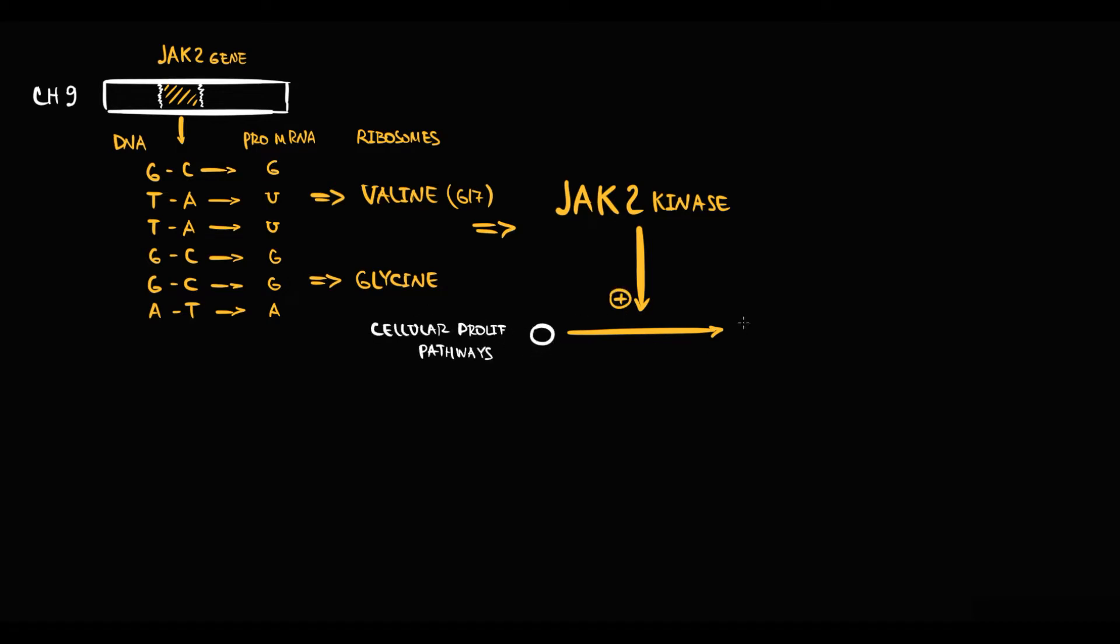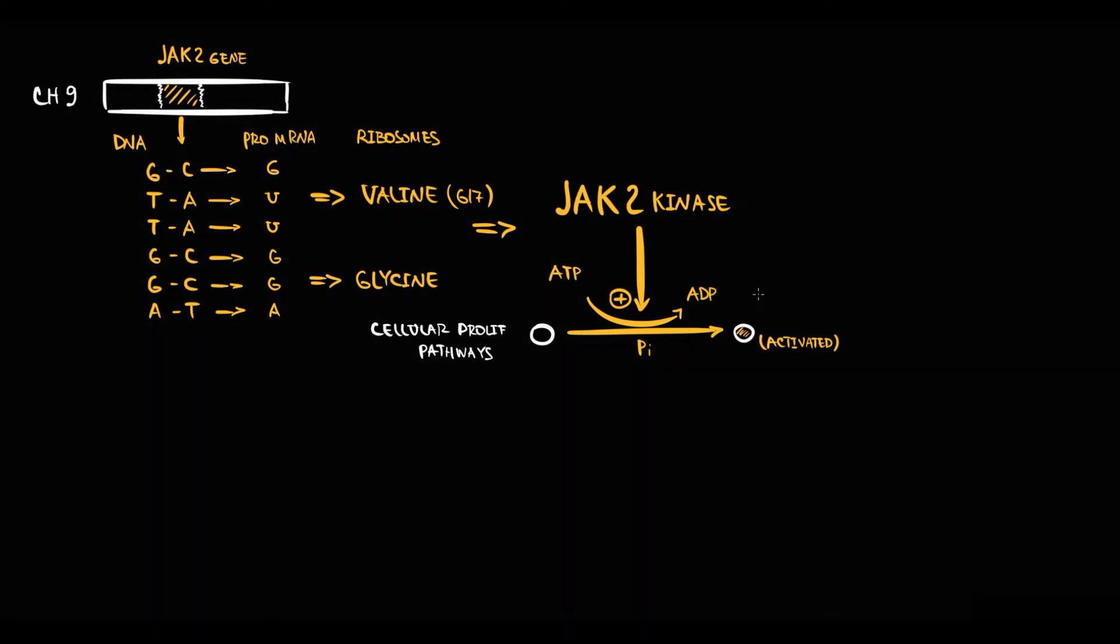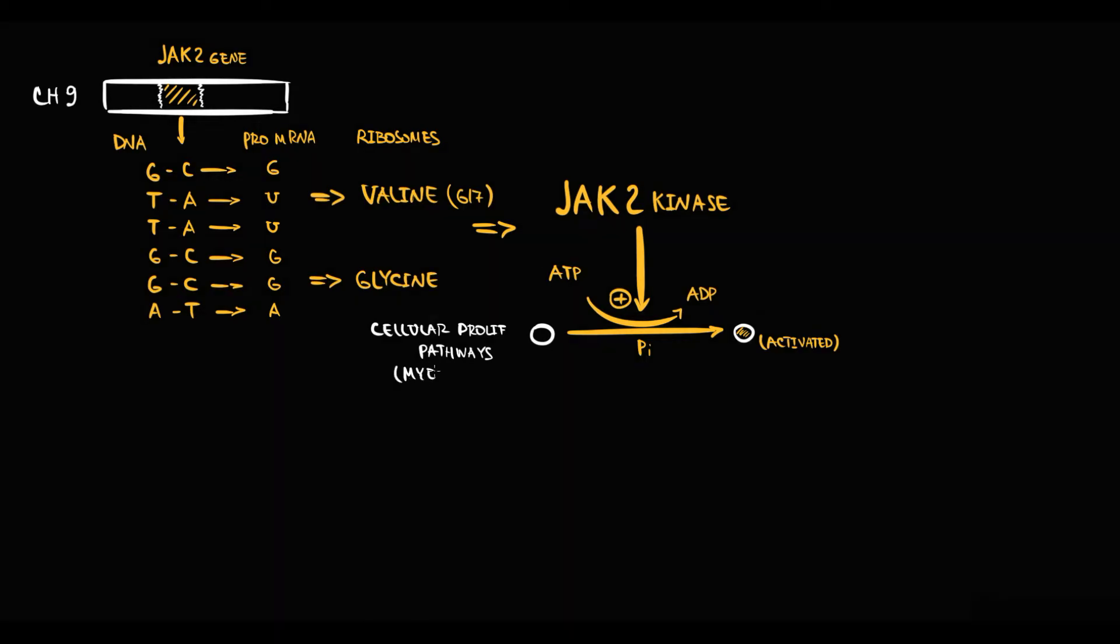Activation of pathways occurs by phosphorylation. In order to activate pathways, JAK2 kinase uses ATP molecule. By ATP molecule, it phosphorylates proteins in this pathway, and as a by-product ADP is released. Important that JAK2 kinase is involved primarily in regulation of myeloid cells.